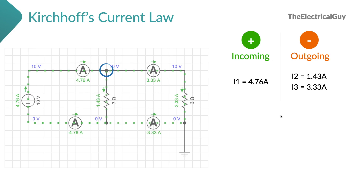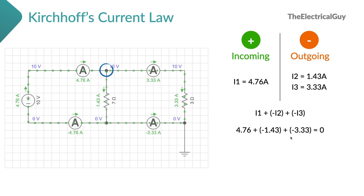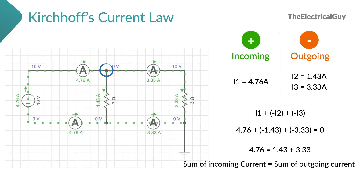Now if we add the incoming and outgoing currents: I1 plus I2 plus I3 — where I2 and I3 will be negative because they are outgoing. If you do the calculation you will get the sum of incoming current plus outgoing current as zero. Negative 1.43 plus negative 3.33 gives us negative 4.76, and the positive and negative cancel each other out, leaving zero. If you take all the negative values to the right-hand side, you get 4.76 equals 1.43 plus 3.33, which is indeed 4.76.